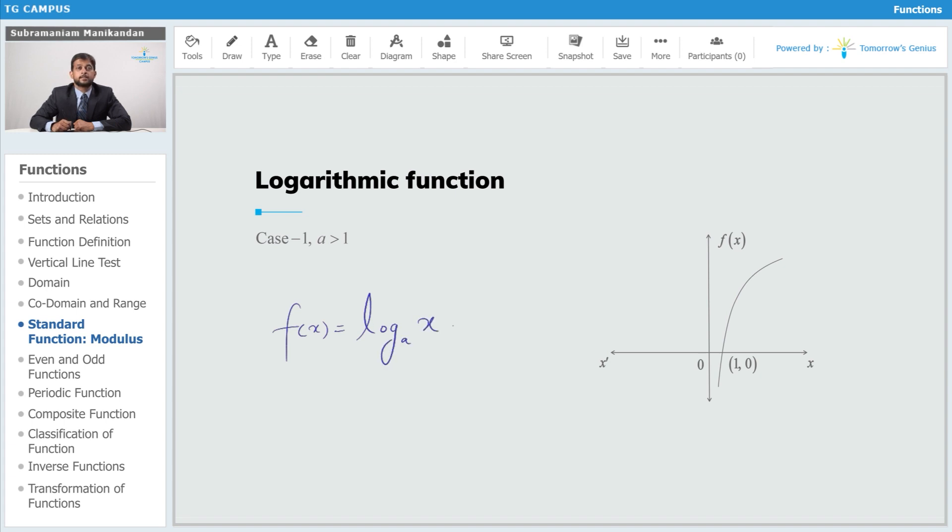If the base is less than 1, then the graph gets inverted like this. Why does that happen? Because when the base is a fractional value, then you need to decrease the exponent in order to increase the log of the number.